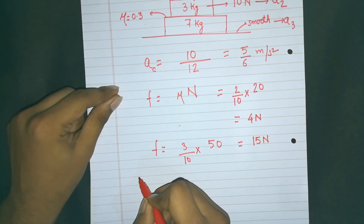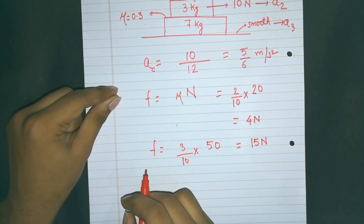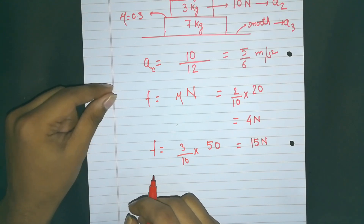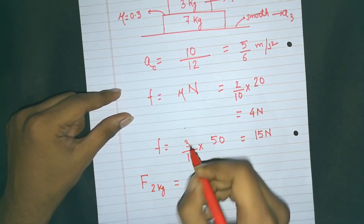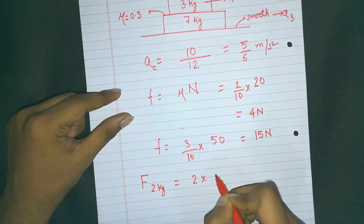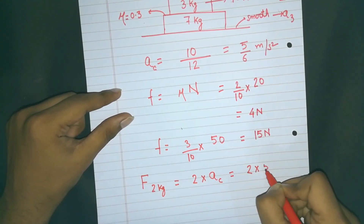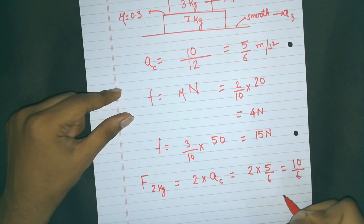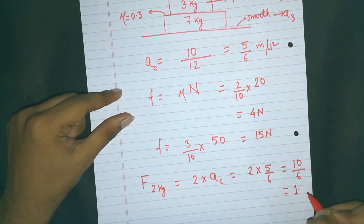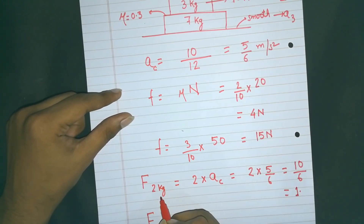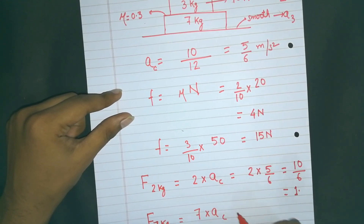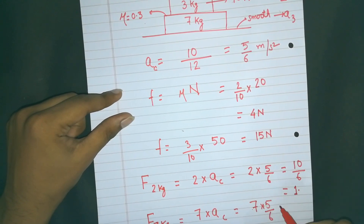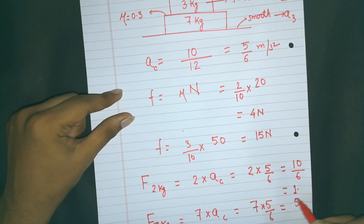For the system to move with common acceleration, let's calculate the forces needed on the 2kg and 7kg blocks step by step. For 2kg: force required = 2 × (5/6) = 10/6 ≈ 1.67 newtons. For 7kg: force required = 7 × (5/6) = 35/6 ≈ 5.83 newtons.